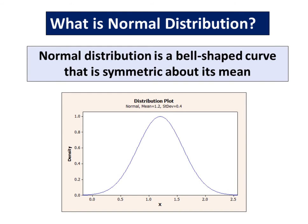What is Normal Distribution? Normal distribution is a bell-shaped curve that is symmetric about its mean.